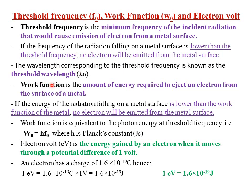Now we look at what we call the work function. Work function is simply defined as the amount of energy required to eject an electron from the surface of a metal. We know that energy E = hf, and from v = fλ there is a relationship between energy, frequency, and wavelength. Therefore, the work function is the energy corresponding to the threshold wavelength and threshold frequency. If that energy is lower than the work function of the metal, then no electron is going to be ejected from that particular metal surface.